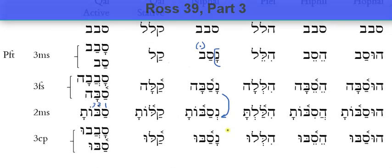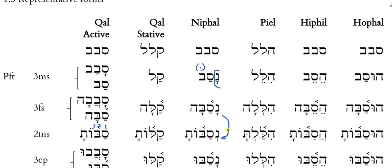Here in the Piel, we have the verb halal. Halal means to praise in the Piel. And you'll recognize this verb, I think. Some characters in the time of Jesus — Hillel — he was a rabbi. A name you know is based on this verb form. And you'll see some other interesting things here in just a moment.